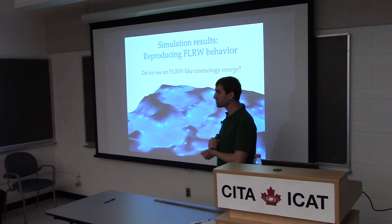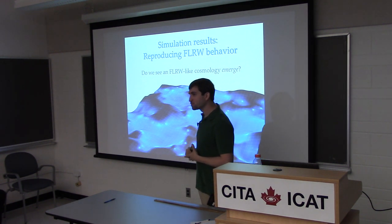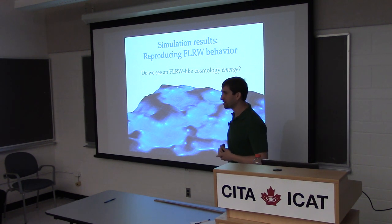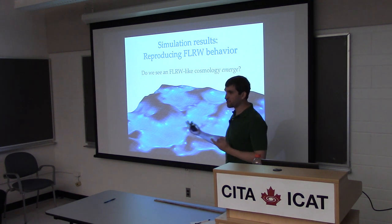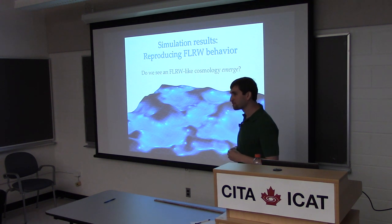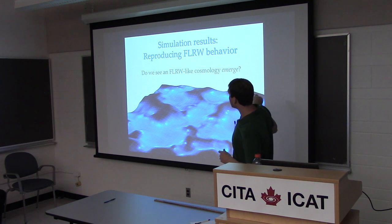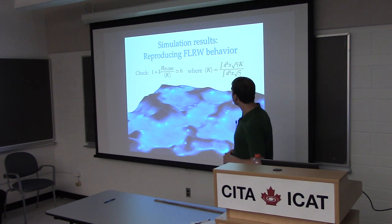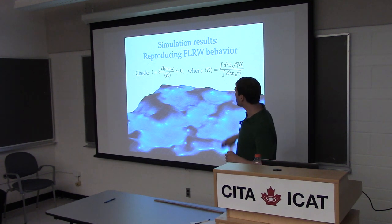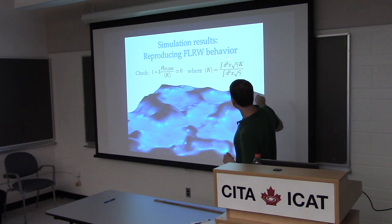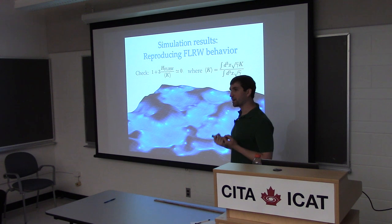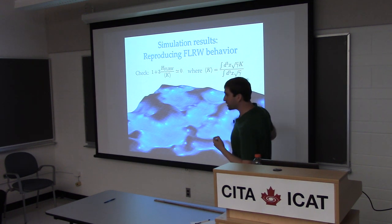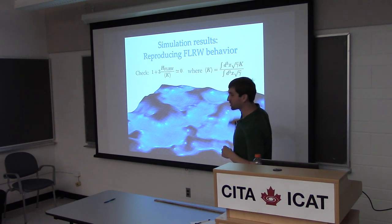Now simulation results. We're starting at high redshift — around redshift 100, still matter dominated since all we're putting in is matter and lambda. We can check what the average expansion rate looks like relative to the FRW one, using a volume-weighted definition of average: the expansion rate at every point in my spacetime, volume-weighted over the entire simulated volume, and then check how well this corresponds to an FRW law.